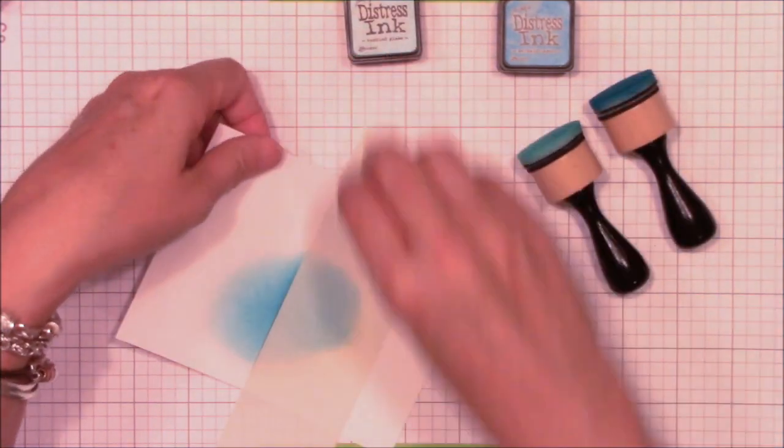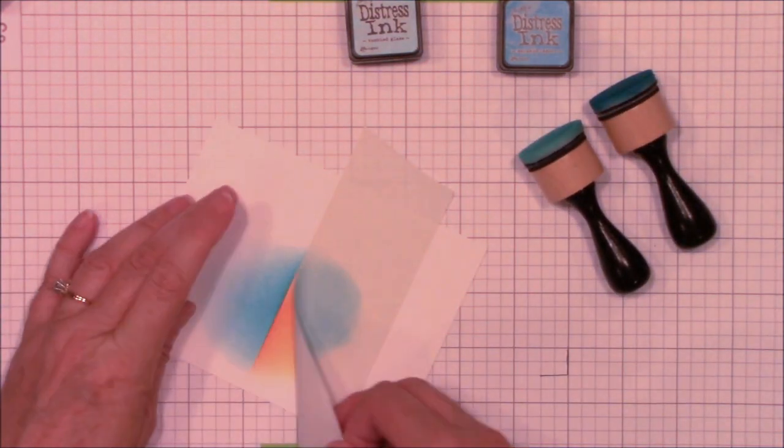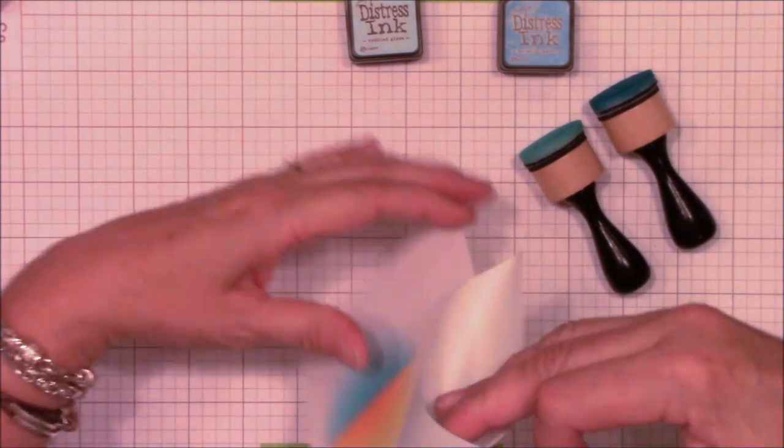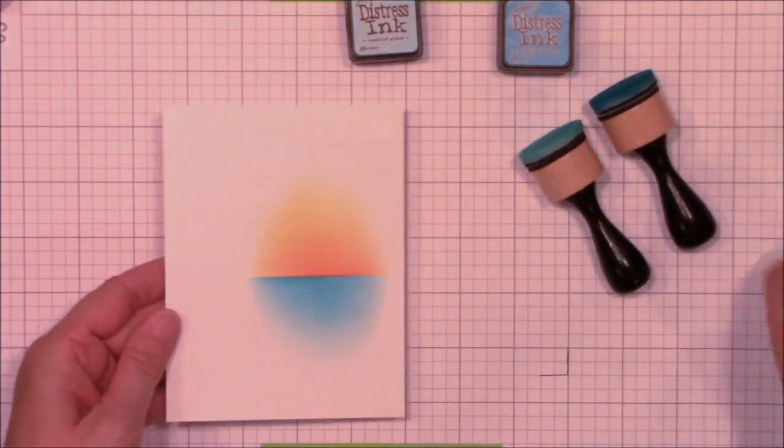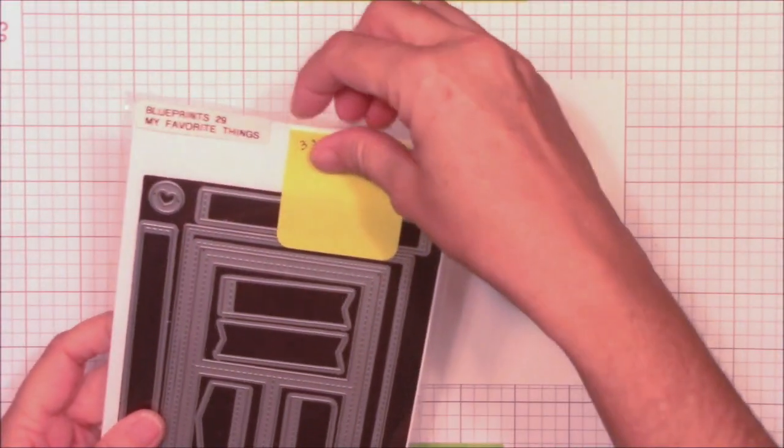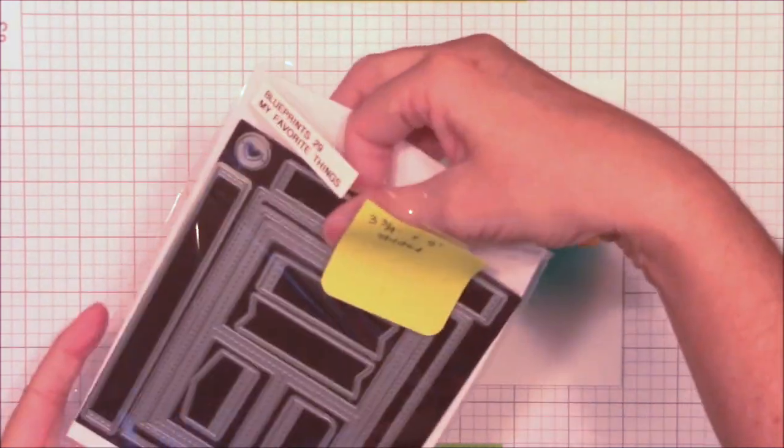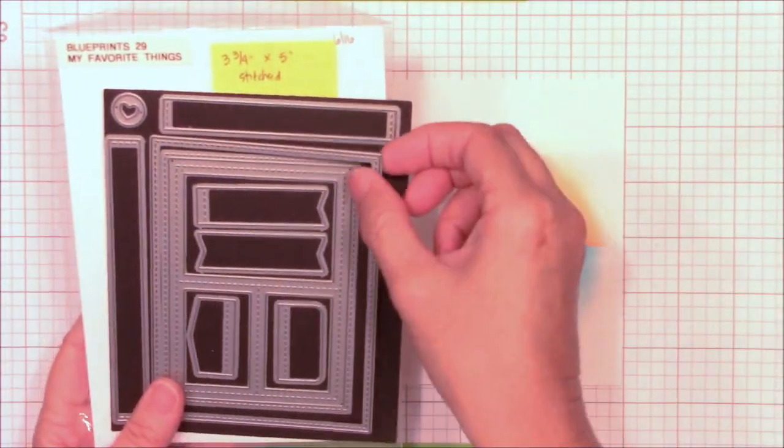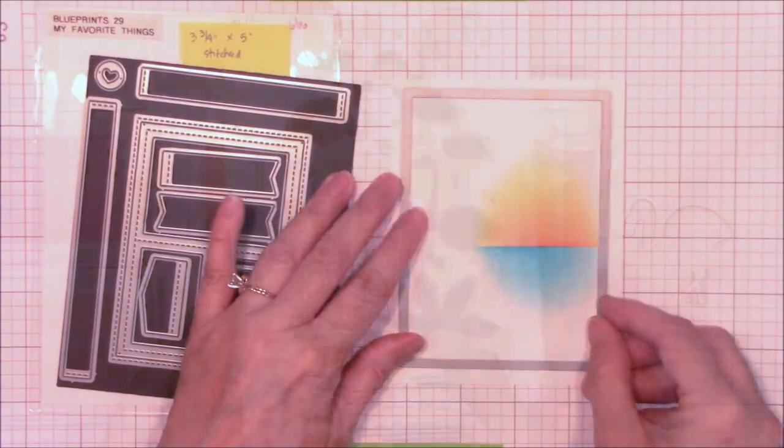I carefully removed that masking tape and voila, a gorgeous ink blended background to spotlight our focal image. I added some stitch detail to the outside edge of my smooth white image panel by die cutting the stitched rectangle from the Blueprints 29 dynamics set.